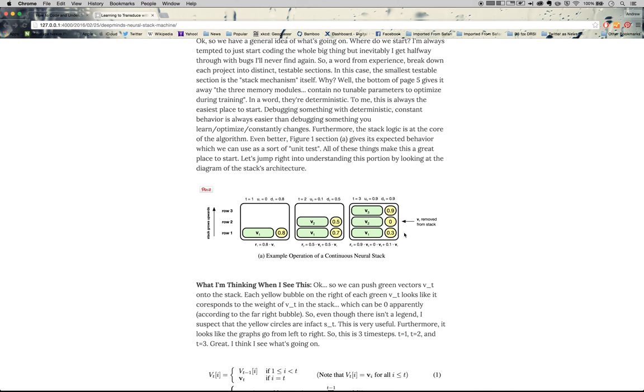But the interesting thing here is this part. This is extremely important. So removing something from the stack actually means setting this value to zero. And that sort of implies what these yellow values are. They're weights. So each thing is not on the stack or off the stack discreetly. Each thing is on the stack or off the stack with a degree of weight. This strength is kind of the heart and soul of what makes this stack work, what makes it continuous and differentiable and trainable.